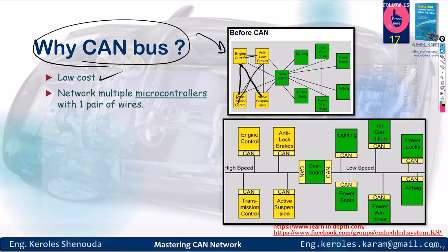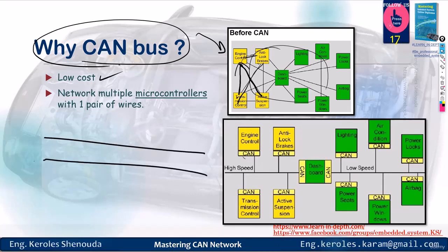It connects multiple microcontrollers with just one pair of wires. Before CAN, for one microcontroller to communicate with another, each one needed a unique connection to the other. So depending on how many ECUs you were connecting to, there were separate wires going to each ECU. Can you imagine how the costs were?